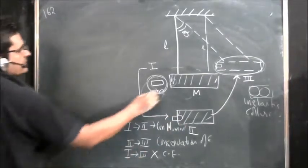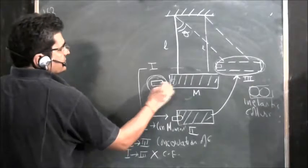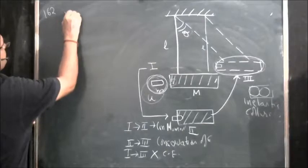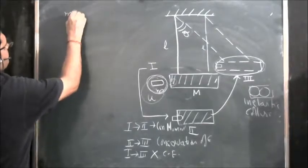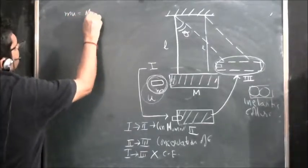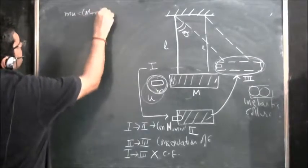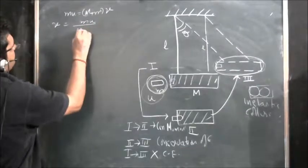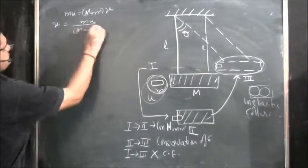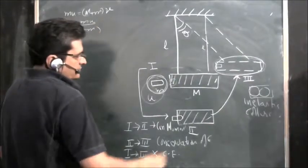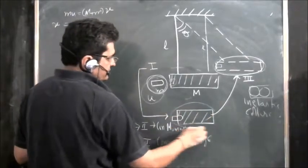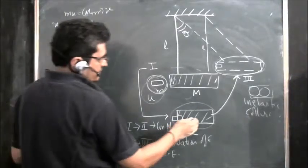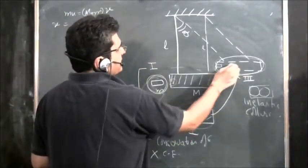Now let us do this step by step — it is a very easy problem. The initial bullet velocity is U. To find the velocity V of the combined system, apply conservation of momentum: mU = (M + m)V, so V = mU / (M + m).